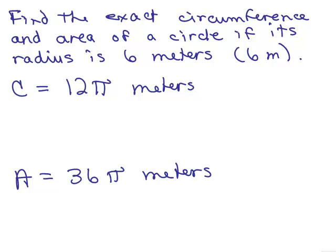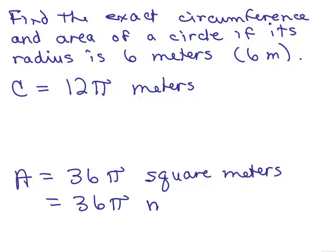I'm sorry, it's not meters. It's square meters, because we're talking about area. Meters times meters. Another way of writing square meters is just writing m squared. It's not a variable. The m in this case actually stands for meters.